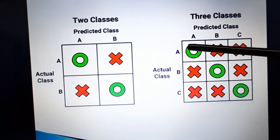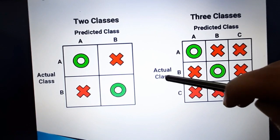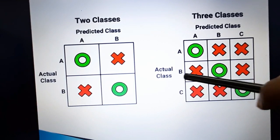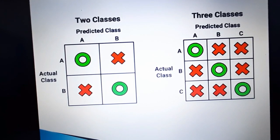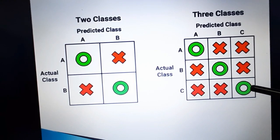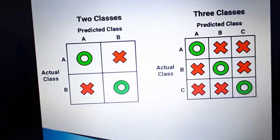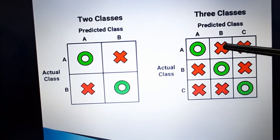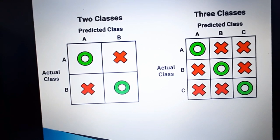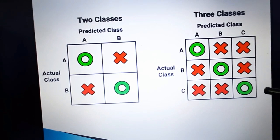When the actual class is A and the predicted class is also A — the first row, first column — that is the correct answer; those are the diagonal elements. For an off-diagonal example: if the predicted class is B but the actual class is A, the original answer is A but the predicted class is B, so it is incorrect. The diagonal elements represent the correct answers, and off-diagonal elements represent incorrect predictions.